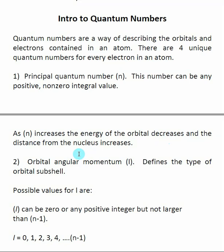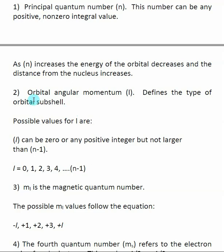As n increases, the orbital gets further away from the nucleus. As the electron gets further from the nucleus, the interaction between the positive nuclear charge and the negative electron charge decreases — so the energy of that interaction decreases. The next quantum number is called the orbital angular momentum, given the letter L. This tells us what type of orbital we're dealing with, as there are different types of spaces where electrons can live, and these provide different chemistry relevant to bonding.